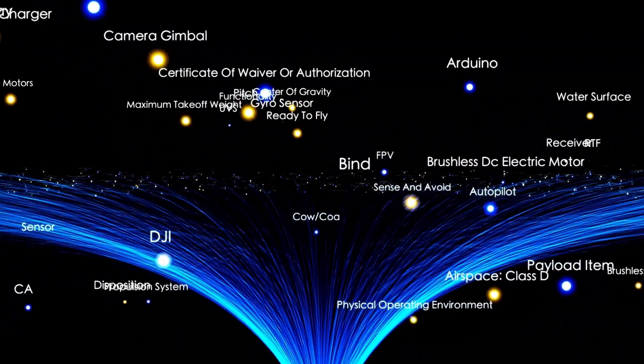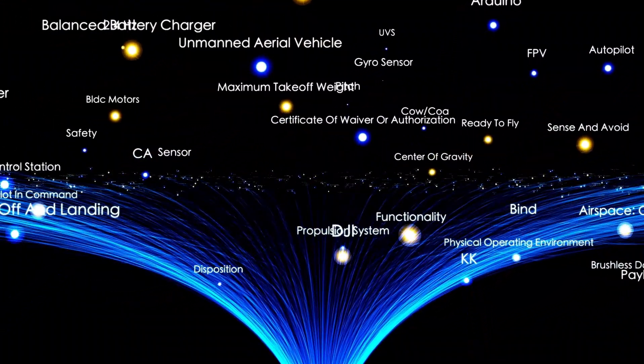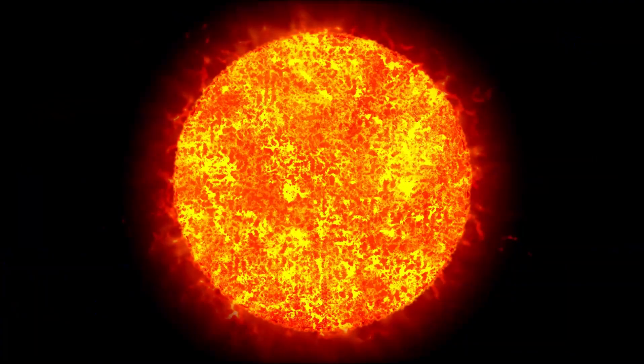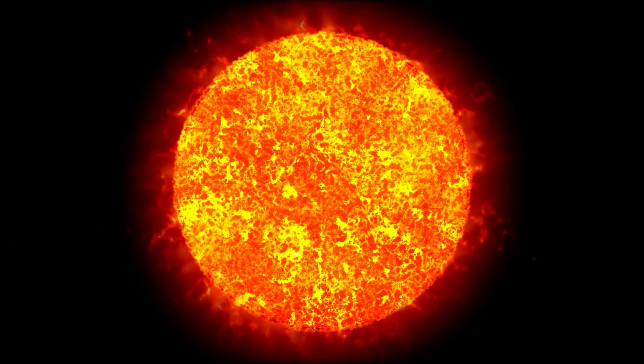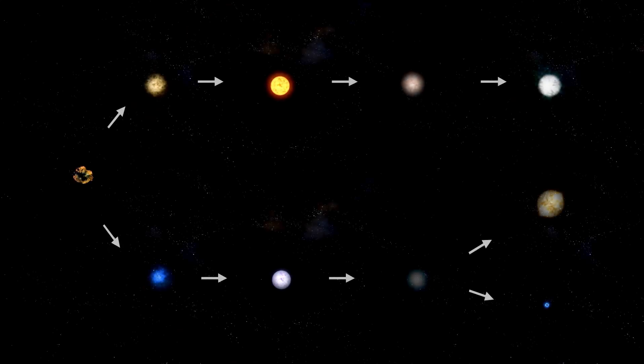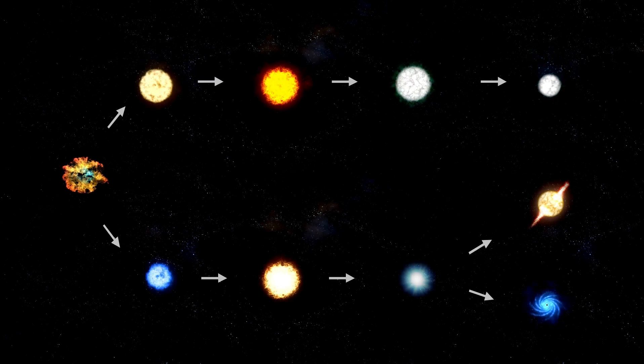The stars also differ in their mass. Betelgeuse is estimated to have a mass of about 11 times that of the Sun, while Antares is thought to have a mass of about 12 times that of the Sun, making them around the same size and mass. Mu Cephei, on the other hand, is estimated to have a mass of about 25 times that of the Sun.